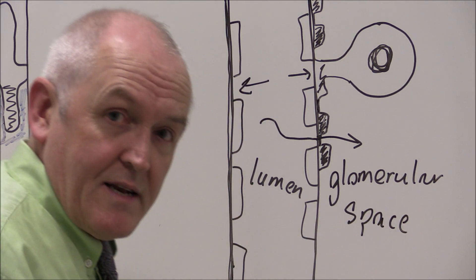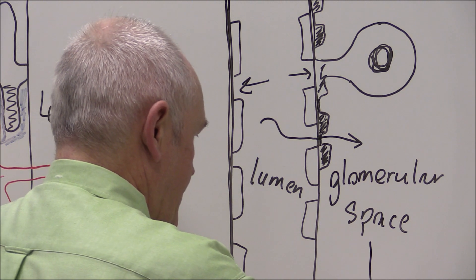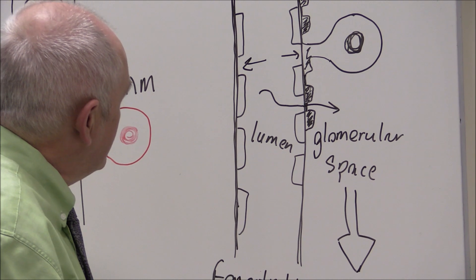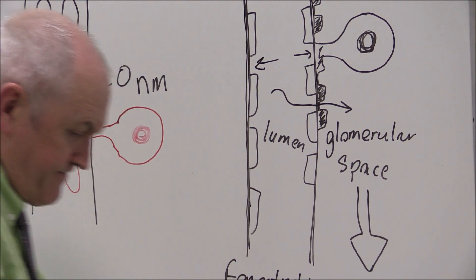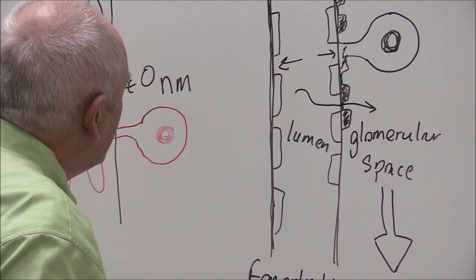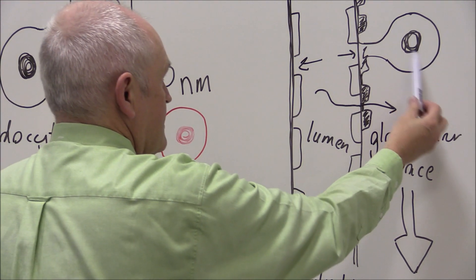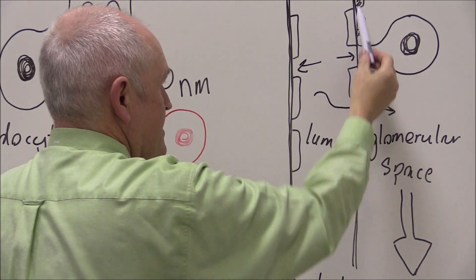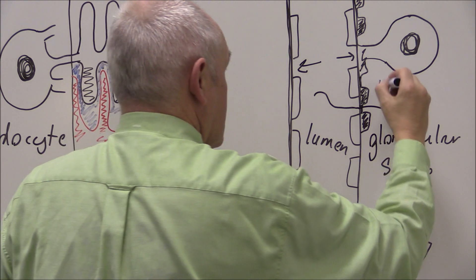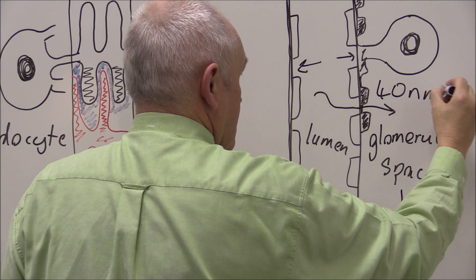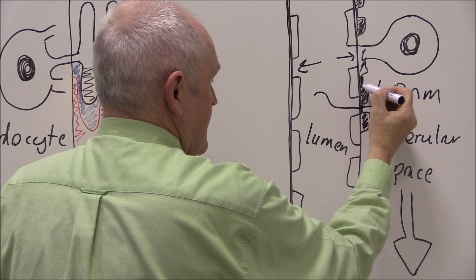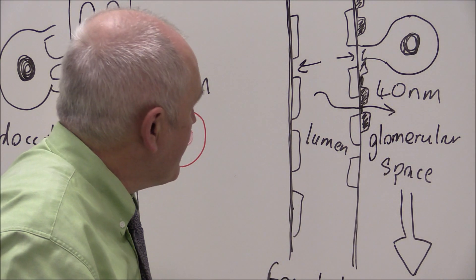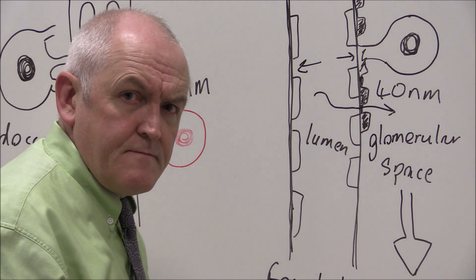Once it's in the glomerular space, the fluid goes on down to enter the proximal tubule. So we have the podocyte, the pedicles, the filtration slits — and remember these filtration slits are only 40 nanometers. From there to there is only 40 nanometers, giving the physical basis for this process of ultrafiltration. Thank you very much.